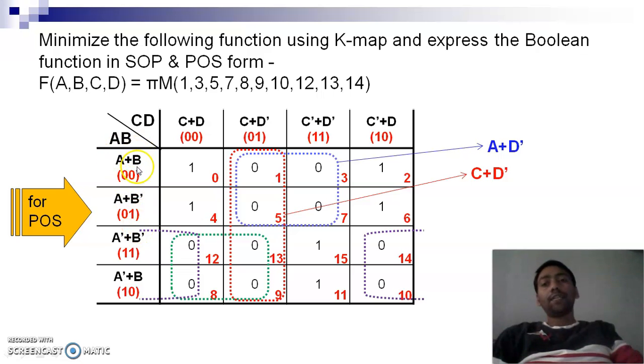The next sum term will be for the red block. This one covers a single column and covers all rows. So A and B are eliminated, and it covers this one column. So C plus D complement is the sum term for the corresponding group of zeros or pair of zeros.